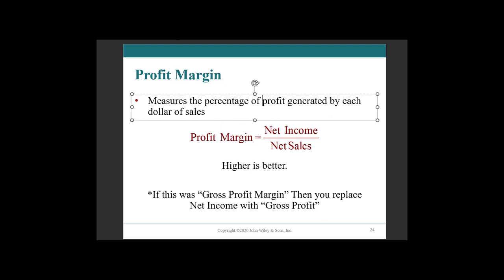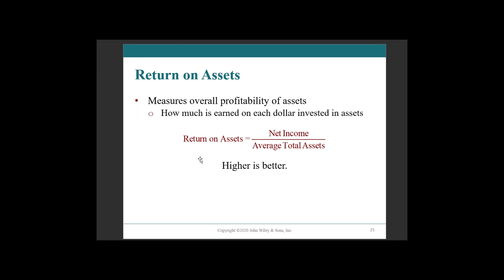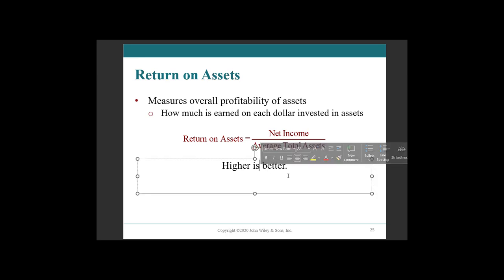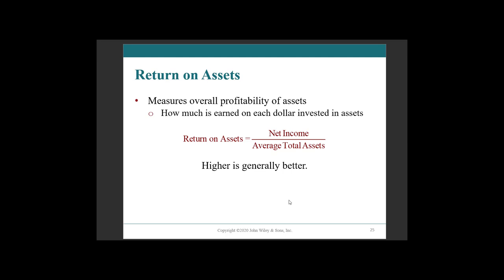Let's look at return on assets. ROA, return on assets, is where we see net income divided by average total assets. What this tells you is: given how many assets you have, how hard are your assets working for you? What are you generating from your assets? In general, higher is better, because it means you have a higher net income versus the amount of assets that you have. It could be that you sold all your assets towards the end of one year and artificially inflated this number, so generally higher is better — it means your assets are bringing in more net income and pulling above their weight.